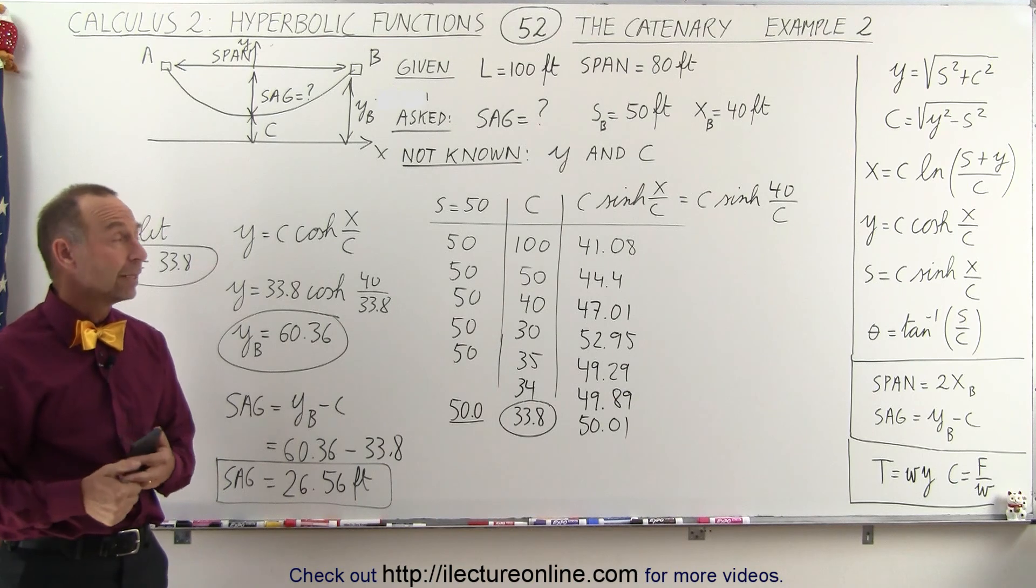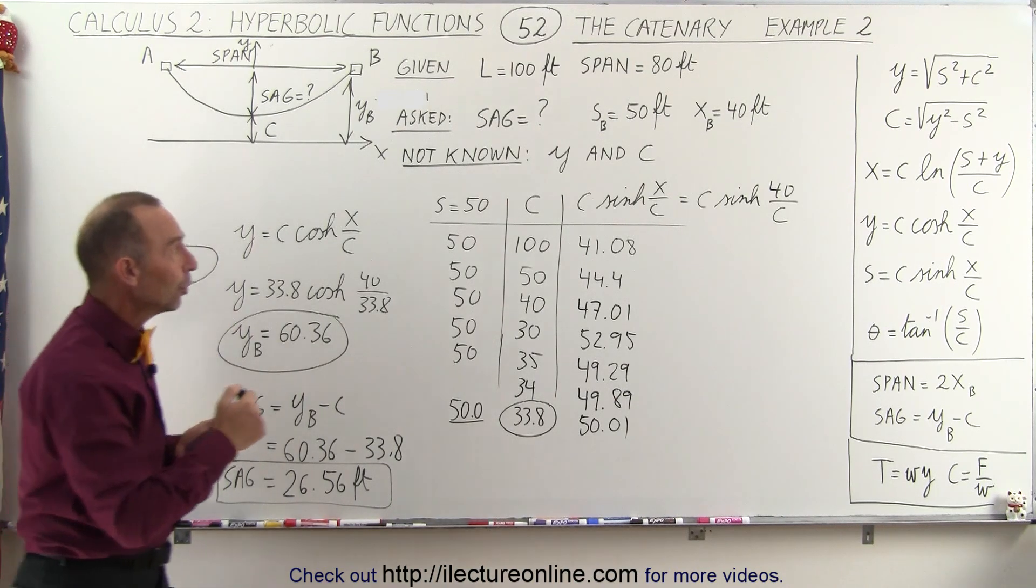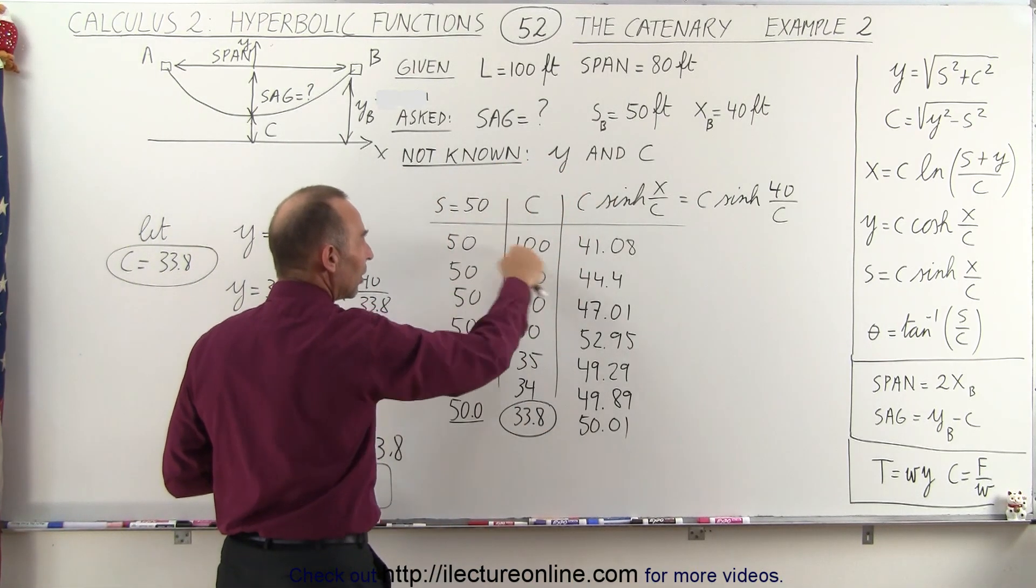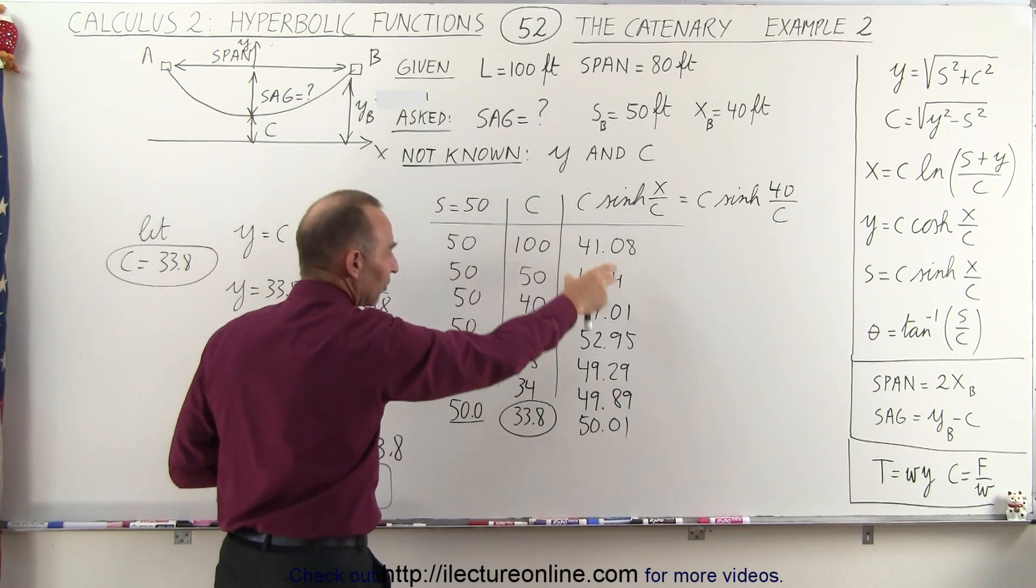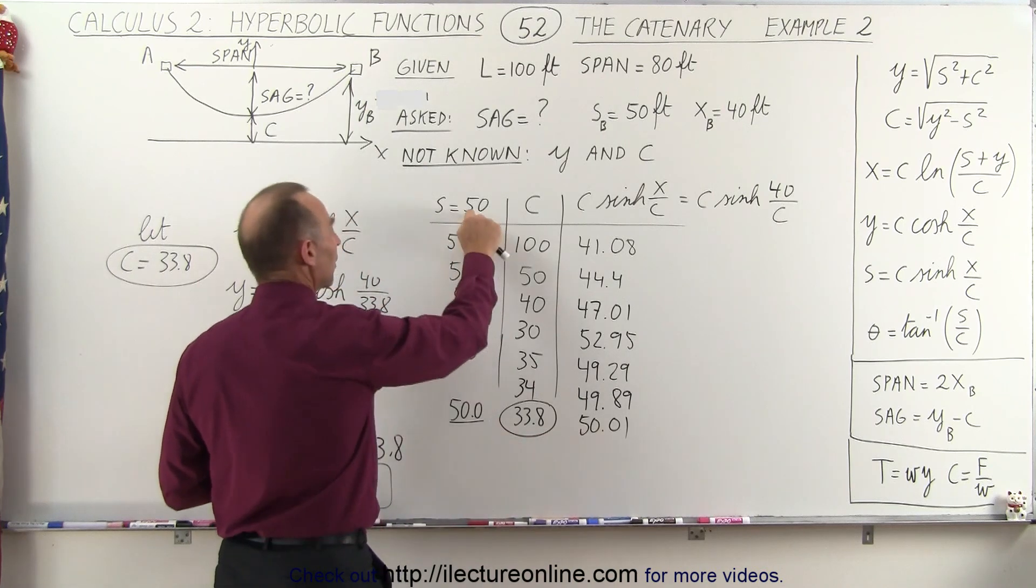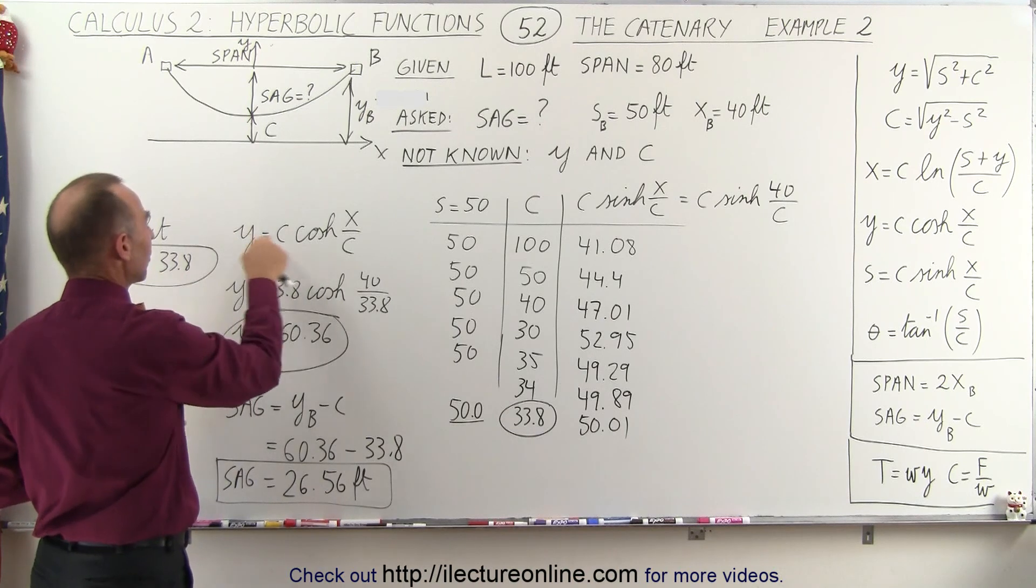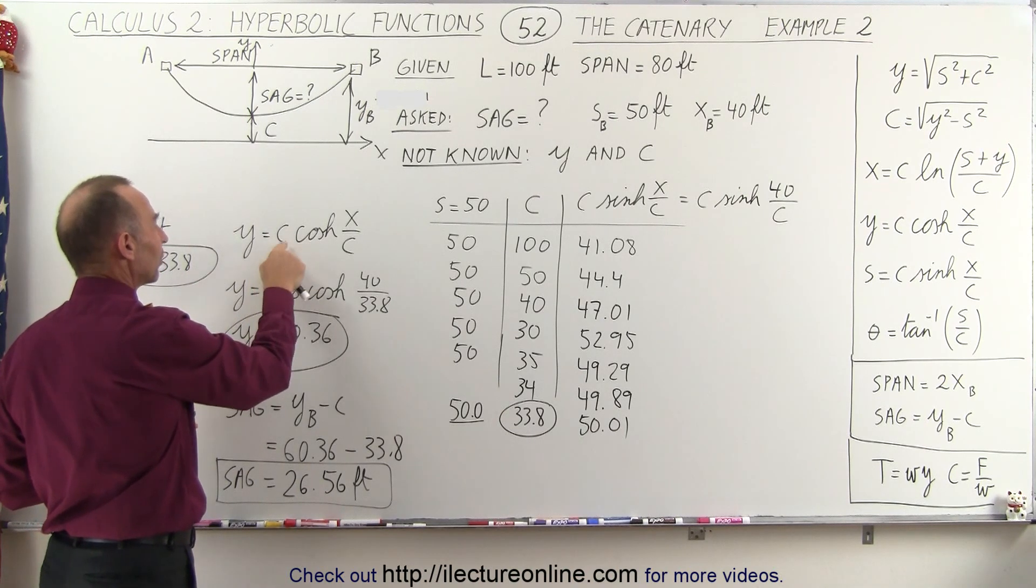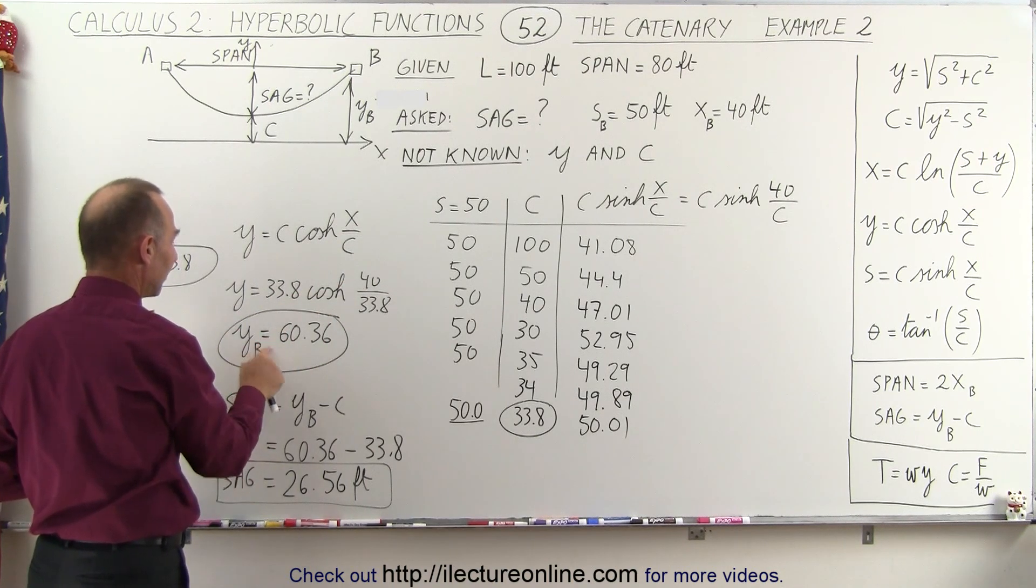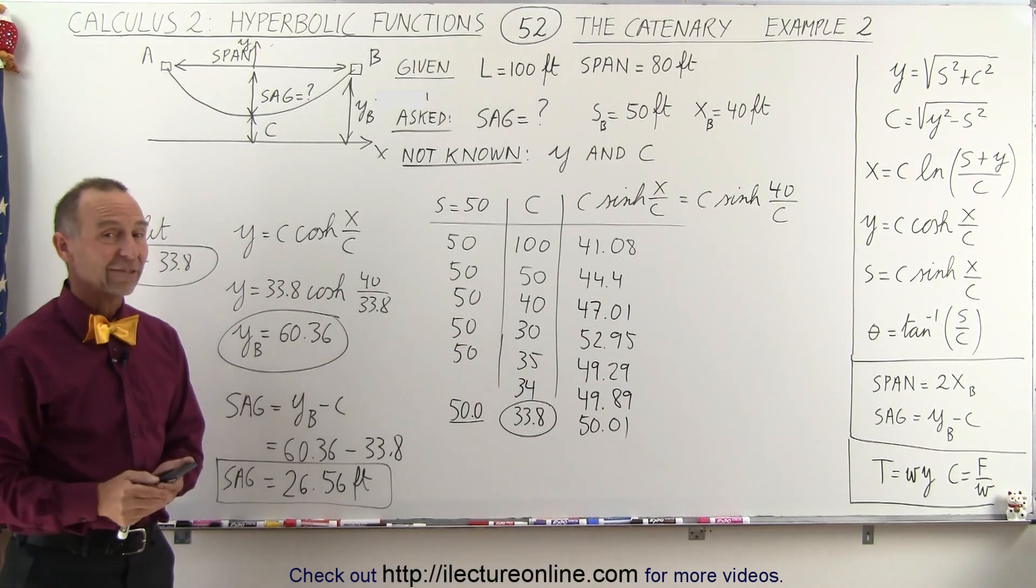So that's how that's done. Now with the catenary, with the hanging cable, if we don't know y and c we have to find that iterative process. We have to find the value for c through plugging in values and then seeing what the corresponding value is until we get something that's close or equal to what we're looking for as being equal to 50. Once we have that then we plug c into our other hyperbolic equation y equals c times the hyperbolic cosine of x over c to get the value for y. And once we have the value for y as well as the value for c we can get the sag in the cable. And that's how it's done.